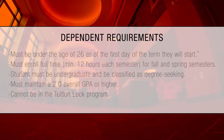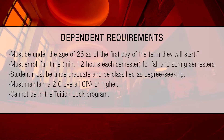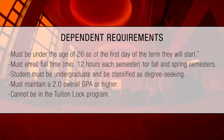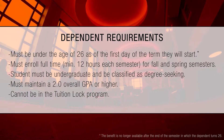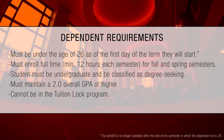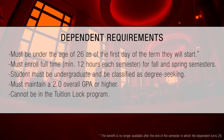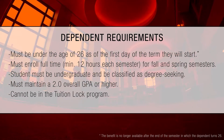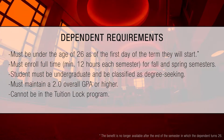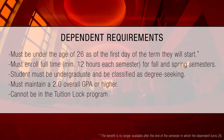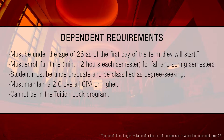Students must meet these requirements: they must be under the age of 26 as of the first day of the term they will start. Further, the dependent child waiver benefit expires after the end of the semester in which the dependent child turns 26. Students must also enroll full-time for fall and spring semesters, meaning a minimum of 12 hours each semester.